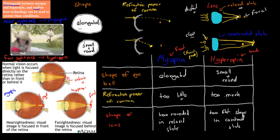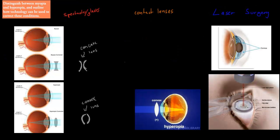So these are the ones you should remember. Nearsightedness means you can see things from near clearly but from far away blurry. Farsightedness means you can see things from far clearly but from near blurry. The focal point in myopia is too far in front; the focal point in hyperopia is too far behind. Remember that table too — shape of eyeball, refractive power of cornea, and shape of the lens. Now for the second part: how technology can be used to correct these conditions.